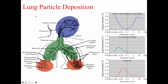The airway may be thought of as distinct regions, especially when it comes to particles entering the lungs. As shown on the slide, there are three distinct regions: the nasopharyngeal region in blue, the tracheobronchial region in green, and the alveolar region in orange. The graphs on the right indicate the size of particles that tend to get deposited in each region. Large particles tend to deposit in the nasopharyngeal region, whereas smaller particles travel further down through the airway to the tracheobronchial and alveolar regions.